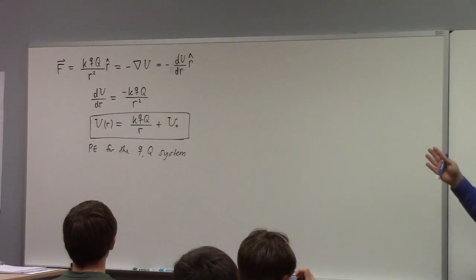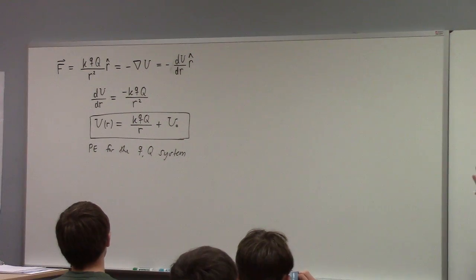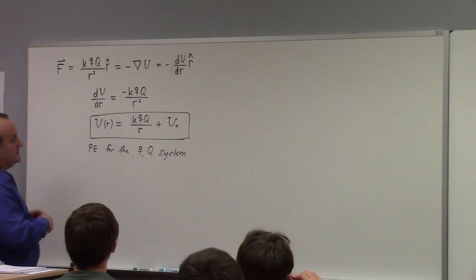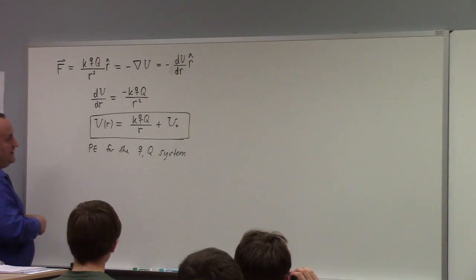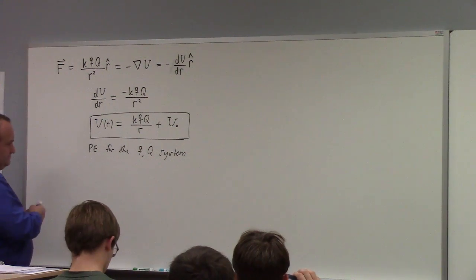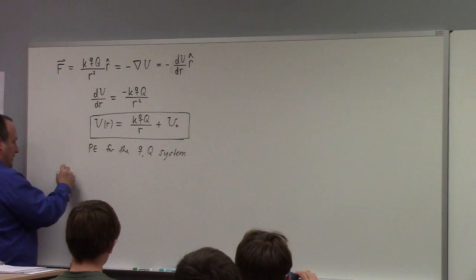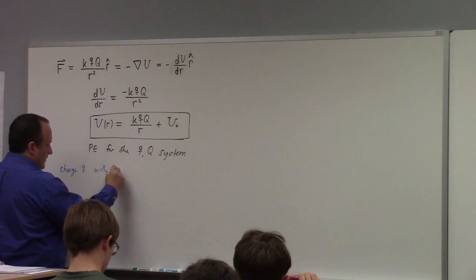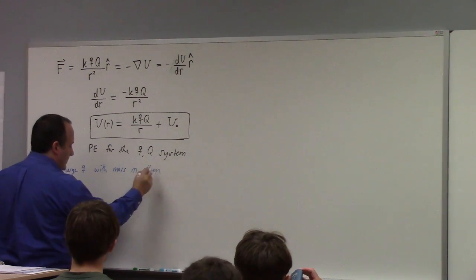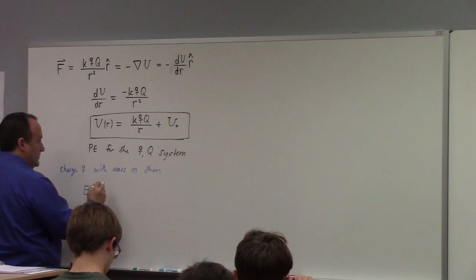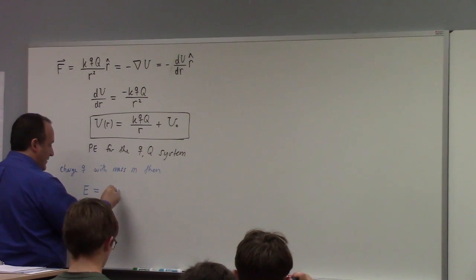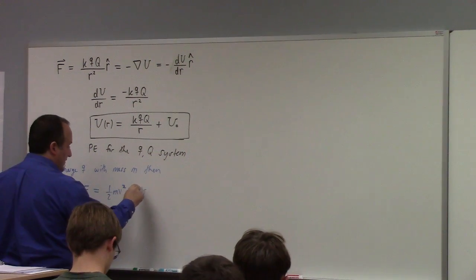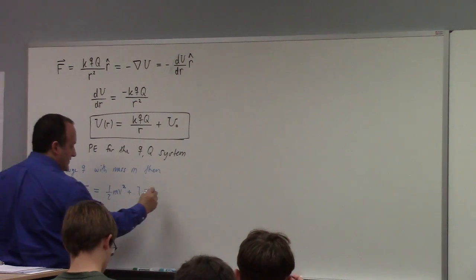That is the potential energy between two charges. If this is the net force on a mass — say, charge q with mass m — then if we write energy equals one-half mv² plus U(r), well, this is constant.